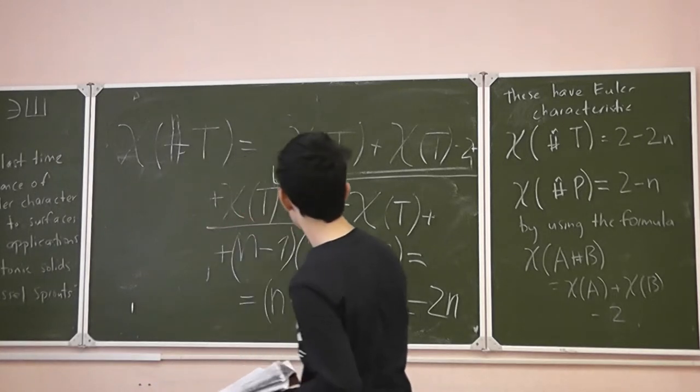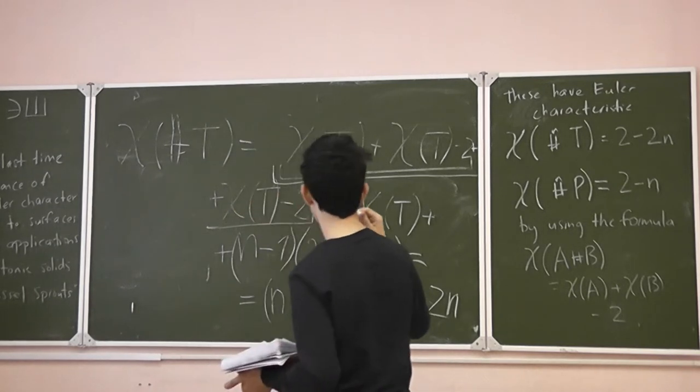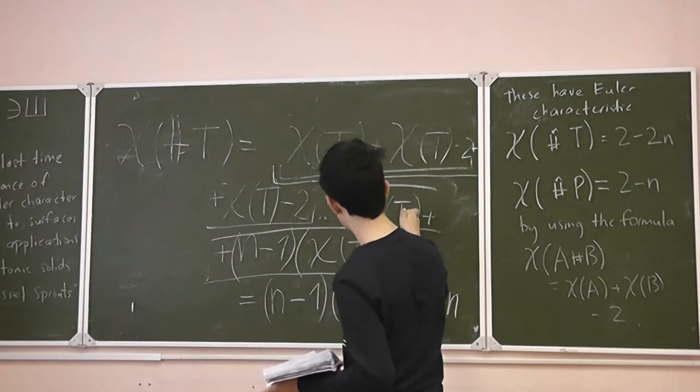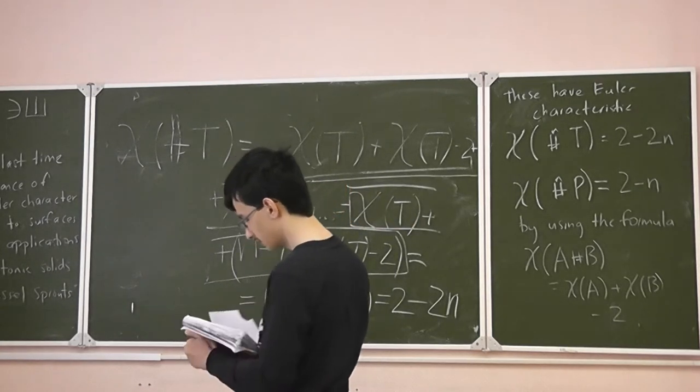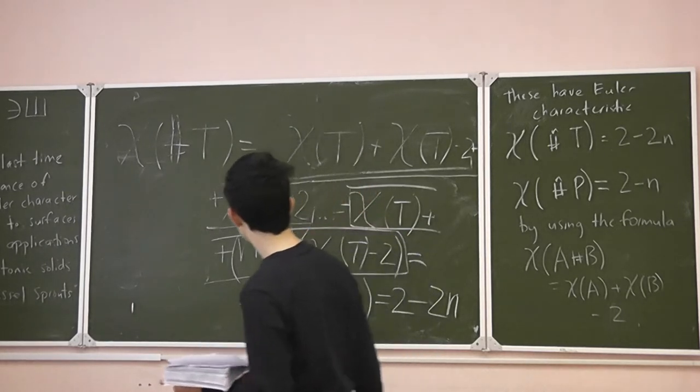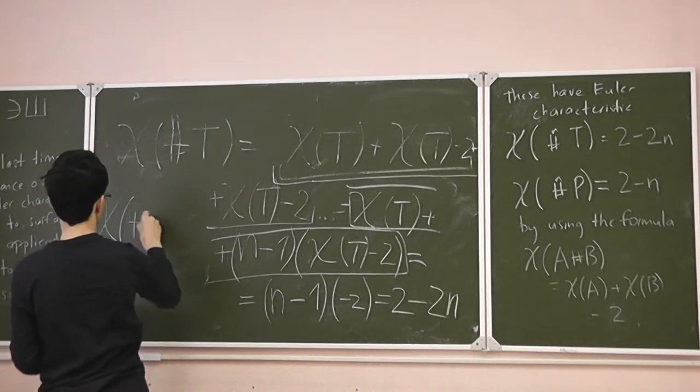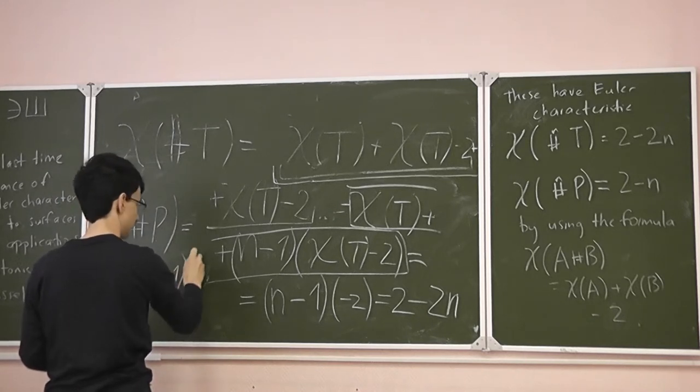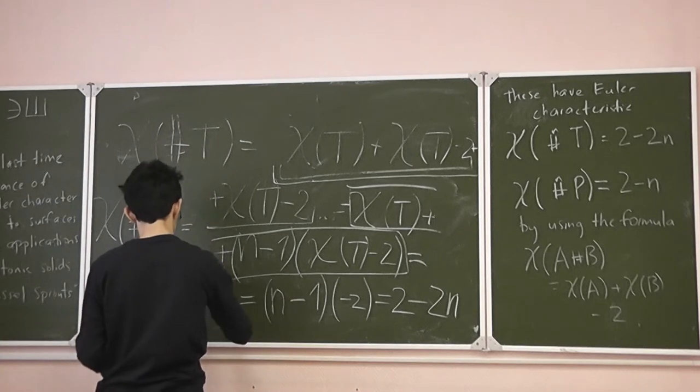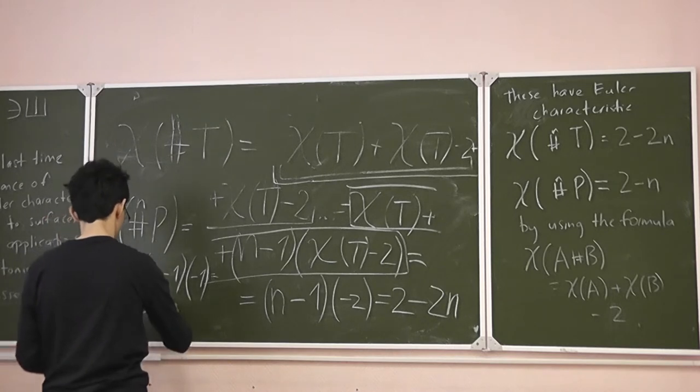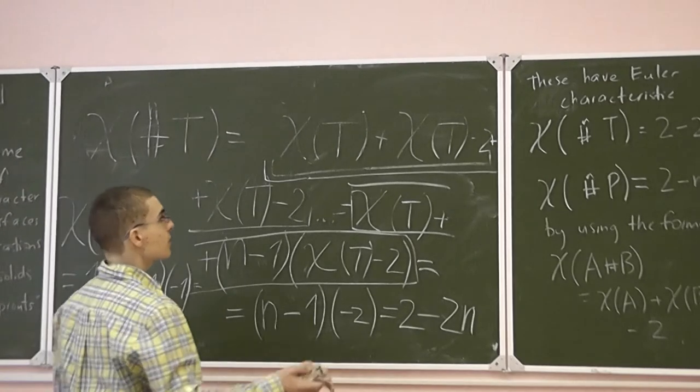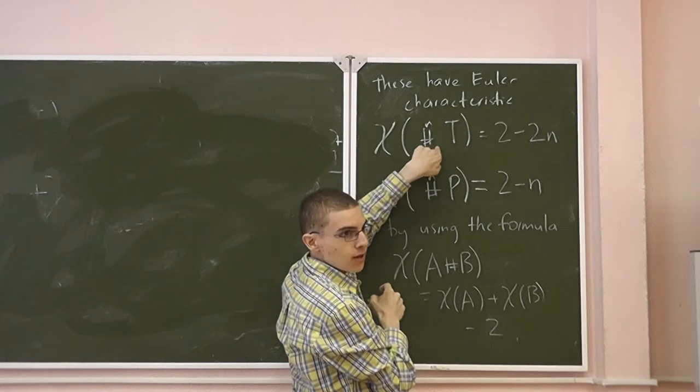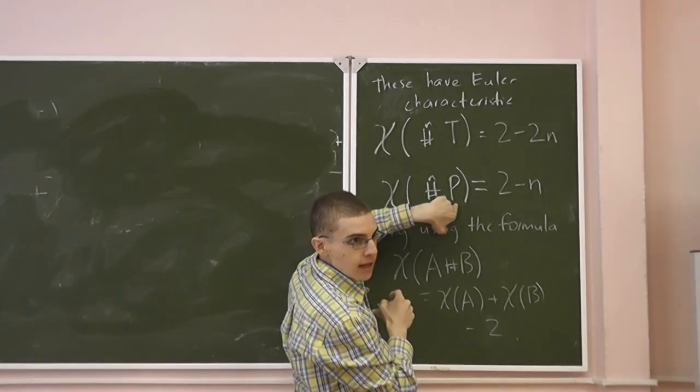And we can do the same thing with projective planes. The only thing we'll need to do with this formula is replace torus by a projective plane. And the Euler characteristic of a projective plane is 1, so the Euler characteristic of n projective planes will be 1 plus n minus 1 multiplied by 1 minus 2, which is the same as 2 minus n. So now we know these different surfaces. We know that the connect sum of n tori is different from the connect sum of n projective planes.